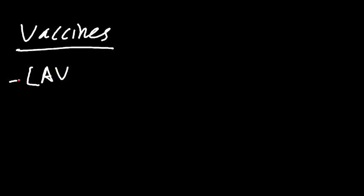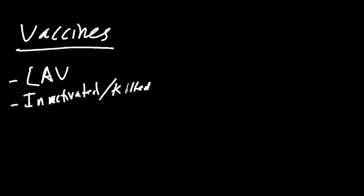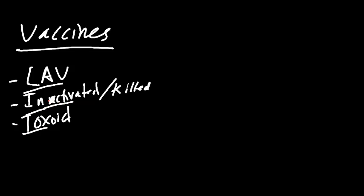First off, we've got the live attenuated virus. Next, we've got the inactivated — also called killed — virus. Then also we've got toxoid vaccines. There are other ones like conjugate or DNA vaccines; however, I'm just going to touch on these three main ones because I think these are the most important to understand.